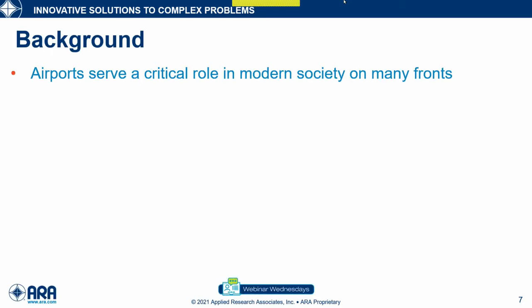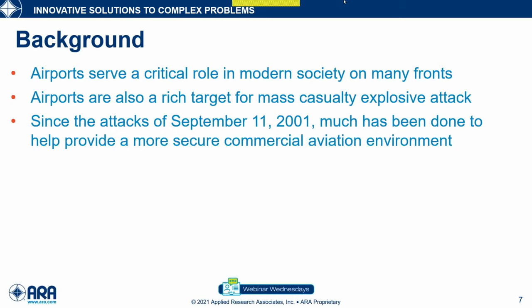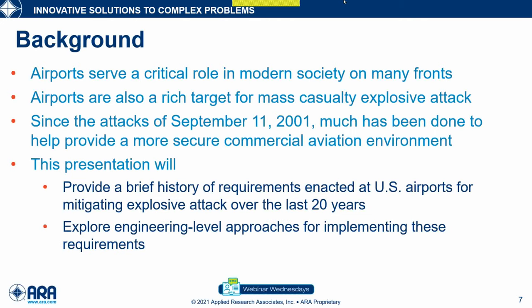A little bit of background: airports serve a critical role in modern society on several fronts. They're also a risk target for mass casualty explosive attack, just by nature of their design and function. Over the past 20 years, much has been done to help provide more secure commercial aviation environments, with measures incorporated at the federal, state, and local levels. In this presentation, we'll provide a brief history of requirements enacted at U.S. airports for mitigating explosive attack, explore engineering-level approaches for implementing these requirements, and provide several project examples.